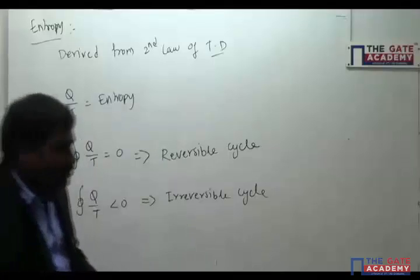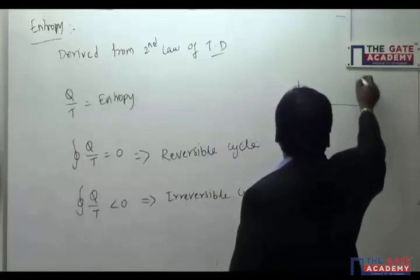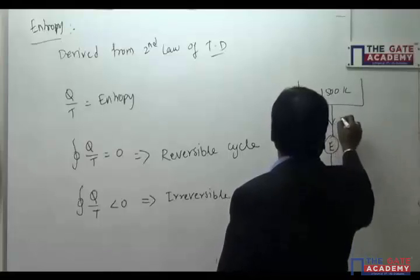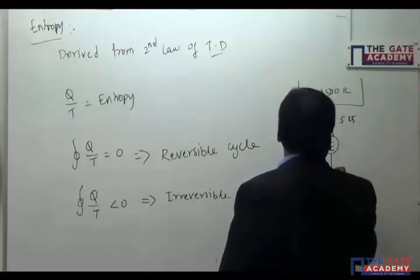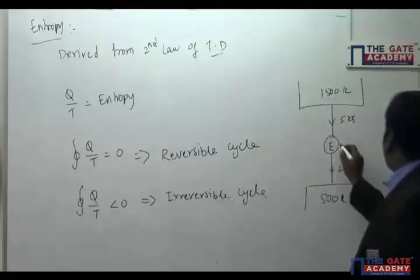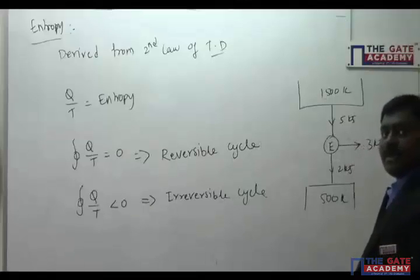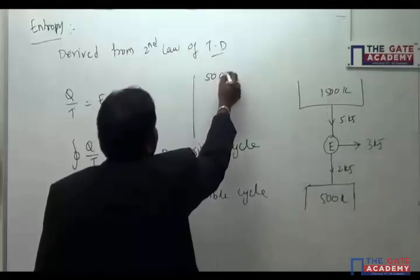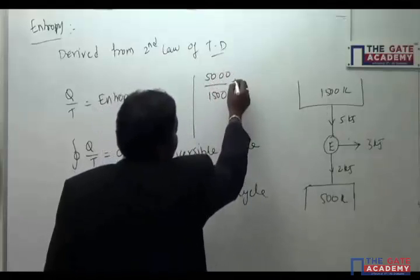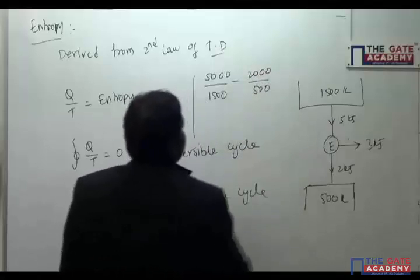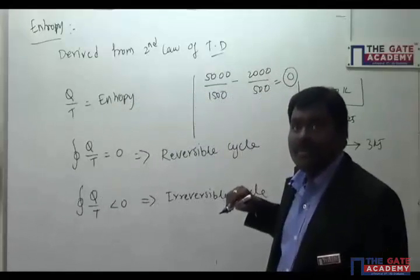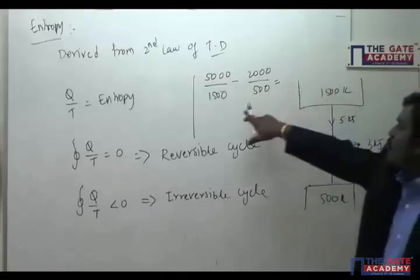Consider a reservoir at 1500 K with an engine: 5 kJ of heat is supplied and 2 kJ of heat is rejected at 500 K, giving work of 3 kJ. We calculate ΣQ/T as 5000/1500 minus 2000/500. If this equals zero, it is a reversible cycle.